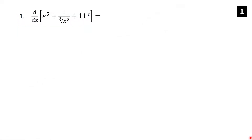Find the derivative of e to the fifth plus one over the cube root of x squared plus 11 to the x. First, rewrite the expression in brackets. In particular, rewrite one over the cube root of x squared as x to the negative two thirds.